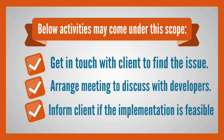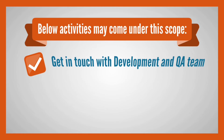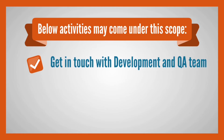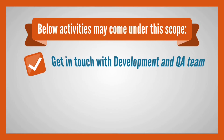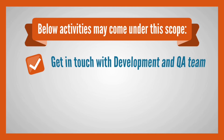Arrange a meeting to discuss with developers for a feasible, optimal solution. Inform the client if the implementation is feasible or in progress. Get in touch with the development and Q&A team to explain the newly identified issue reported by the client and the relative test cases.